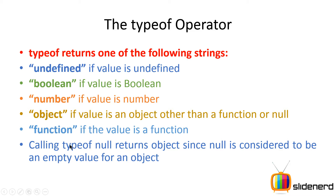If you say typeof null, it returns 'object'. Now, consider a number like age — it starts at zero and goes up. But when you talk about an object, it may have some meaningful value; if it has no value it is supposed to hold null. That's the recommended approach. So when you call typeof null, the operator returns 'object'. We'll discuss this further when we cover object-oriented JavaScript.